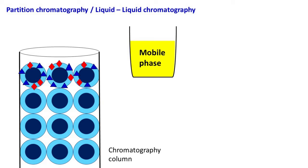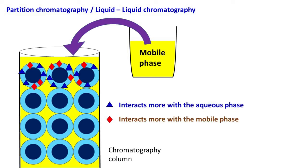The mobile phase is a solvent or a mixture of solvents immiscible with the stationary phase. As the mobile phase passes through the column, the sample molecules in the stationary phase start interacting with the mobile phase and move down the column.